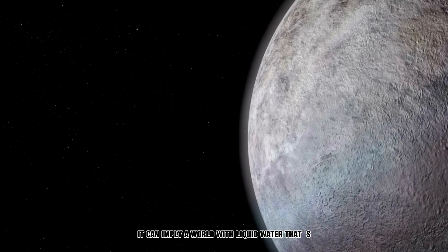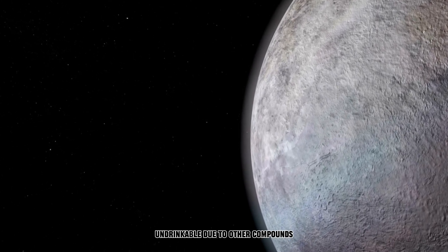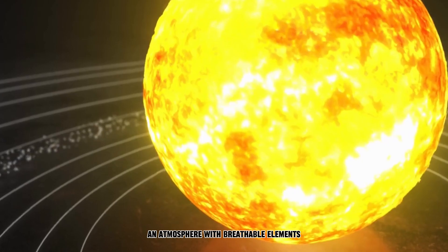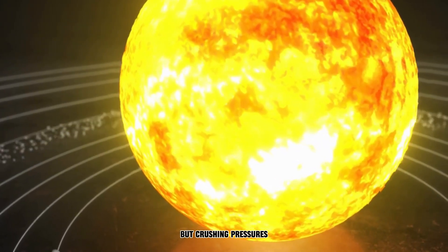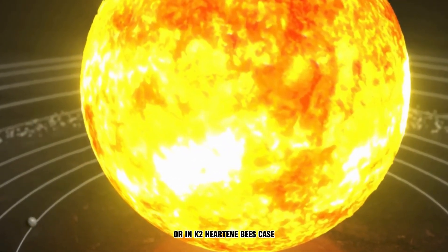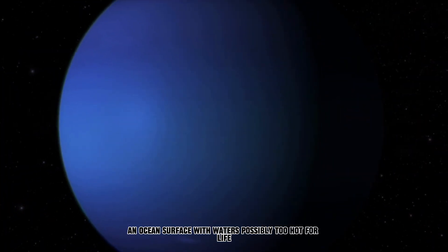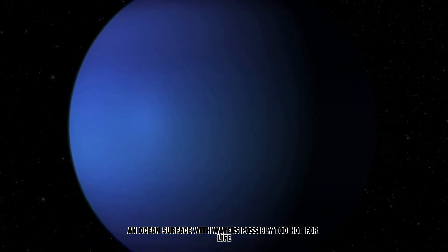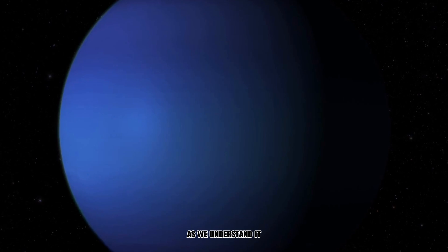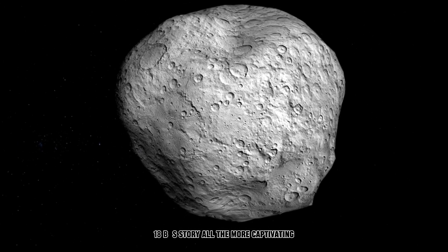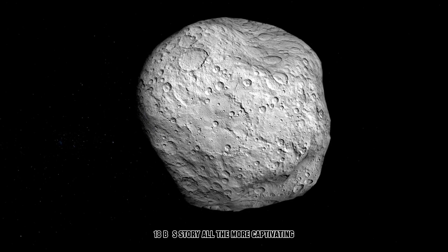Habitable doesn't mean Earth 2.0. It can imply a world with liquid water that's undrinkable due to other compounds, an atmosphere with breathable elements but crushing pressures, or, in K2-18b's case, an ocean surface with waters possibly too hot for life, as we understand it. These nuances make K2-18b's story all the more captivating.